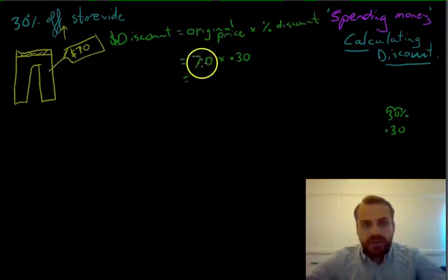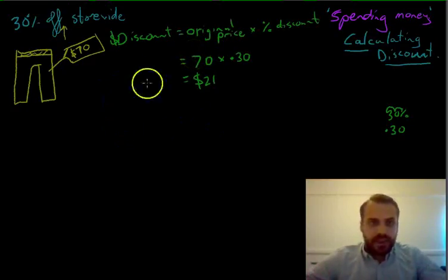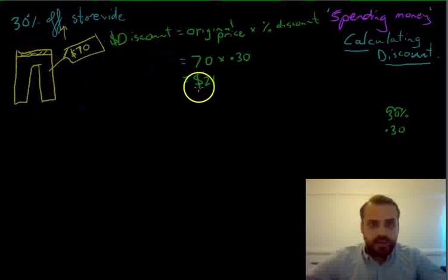Now when you do that, you're going to get $21. You can do that on your calculator obviously, don't try to do it in your head. Stop, think a little bit. Now you're not going to pay $21 for this pair of pants. $21 is the amount of discount.